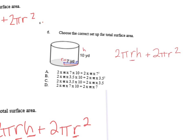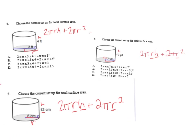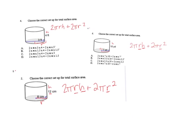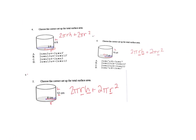Number six — same thing: two times pi times radius times height, plus two times pi times radius squared. They didn't draw the line all the way across — they only drew it halfway and said it was seven. That's your radius, no adjustment needed. Then the height is given. Just plug in the radius and the height, and see which answer choice matches. Email if you have any questions.